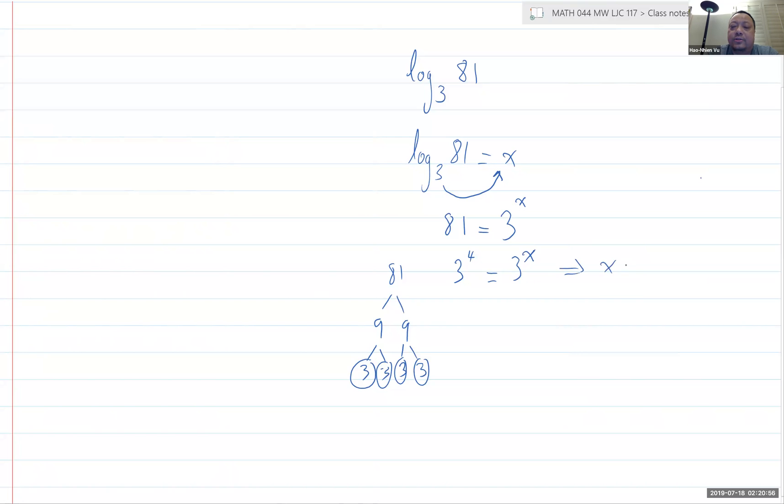So X is equal to 4. And X was log base 3 of 81. So that means log base 3 of 81 is equal to 4. The answer is supposed to be 4.